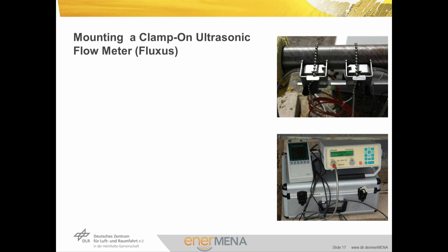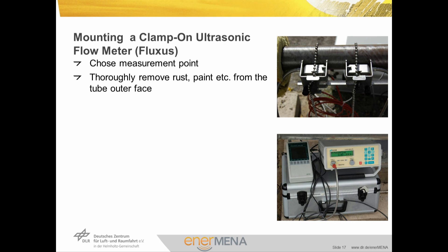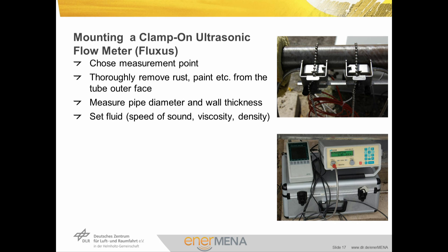Mounting a clamp-on ultrasonic flow meter can be broken down to the following steps. First, the measurement point is chosen according to the criteria discussed previously. Then all rust, paint, etc. must be removed thoroughly from the pipe to assure good signal coupling. The pipe diameter and wall thickness must be known or measured. Next, the fluid characteristics — like speed of sound, viscosity and density — as well as the characteristics of the piping, such as geometry and material, are entered into the evaluation unit.